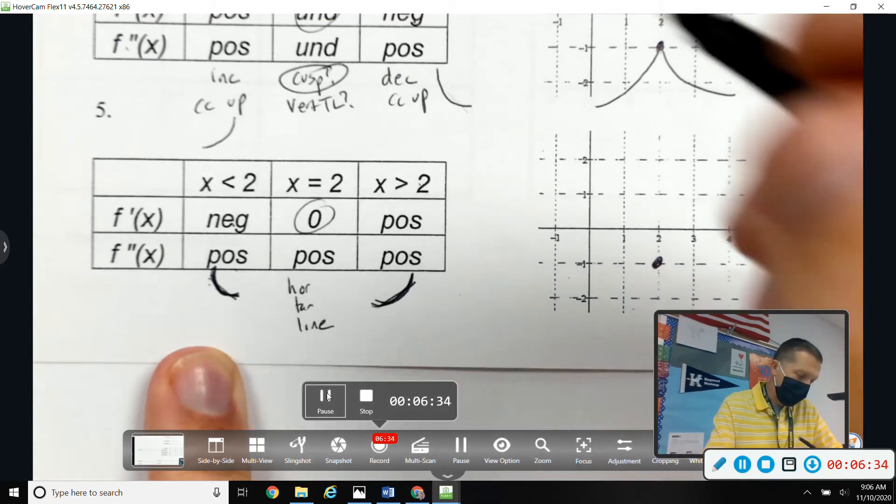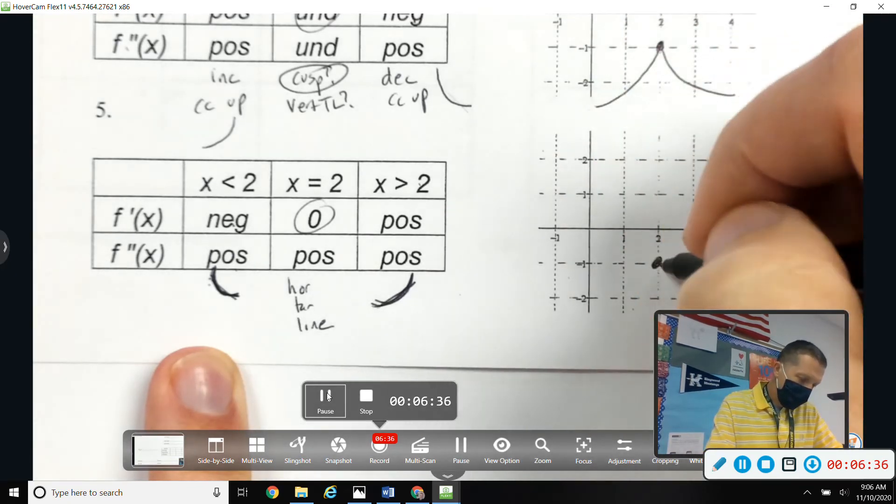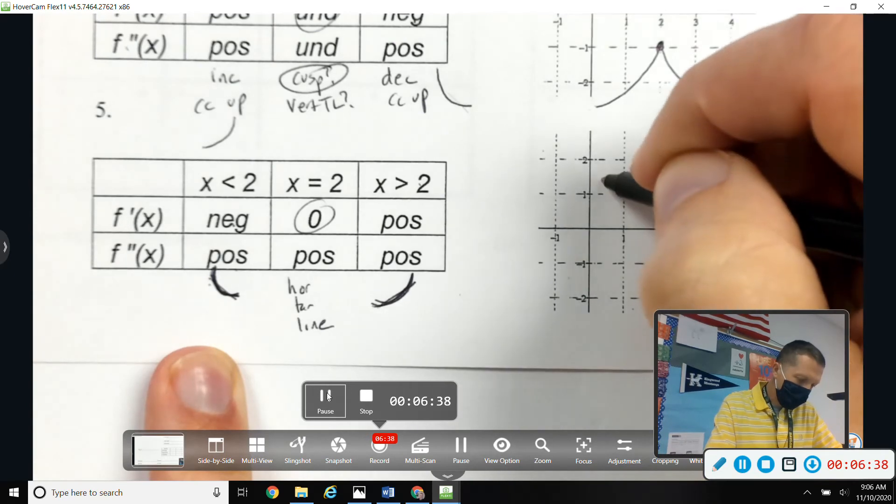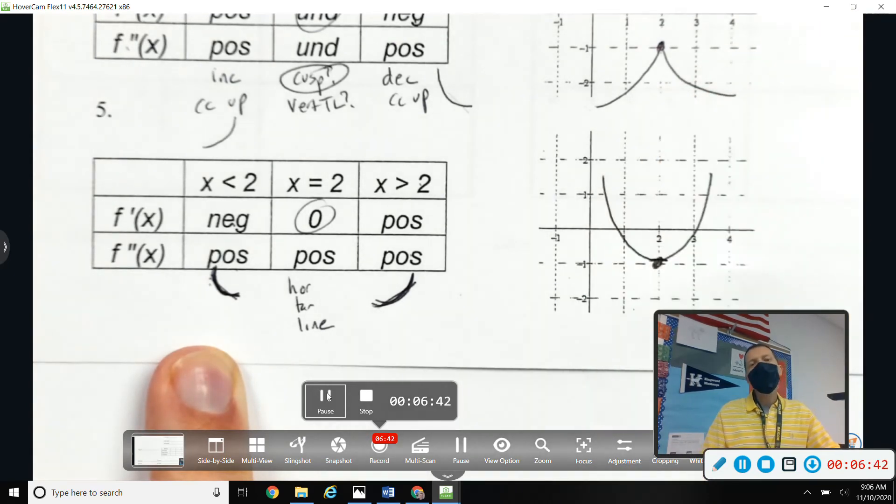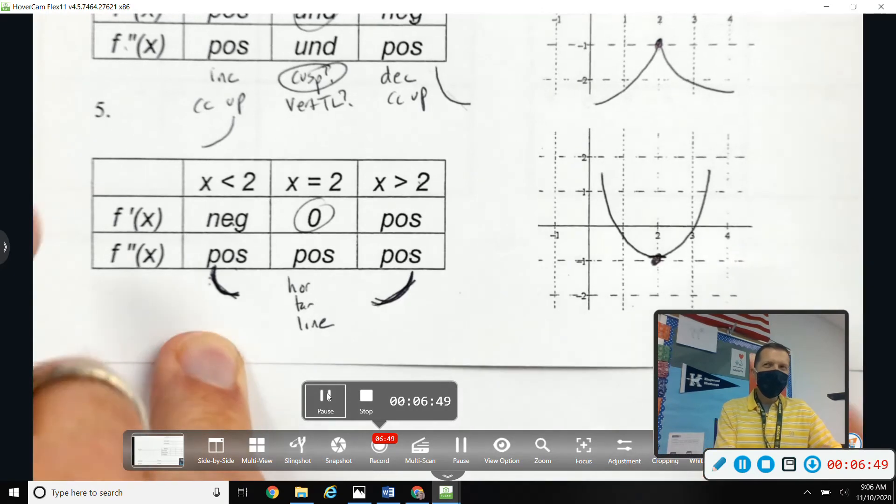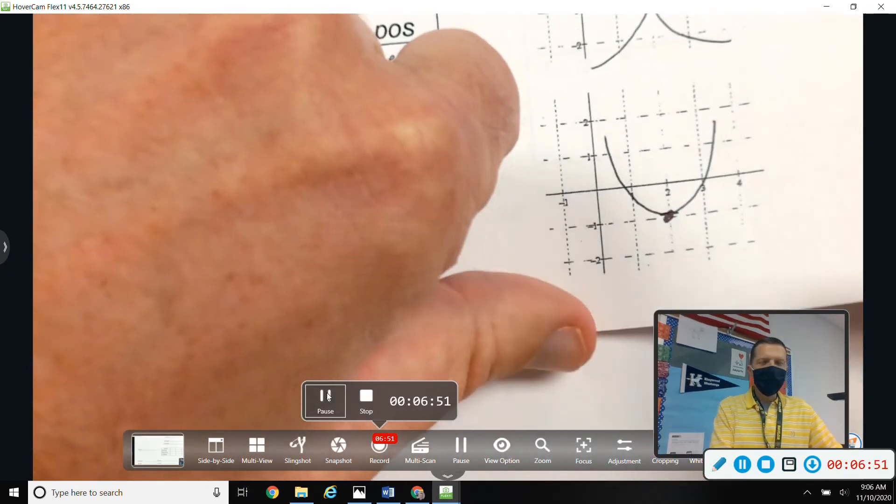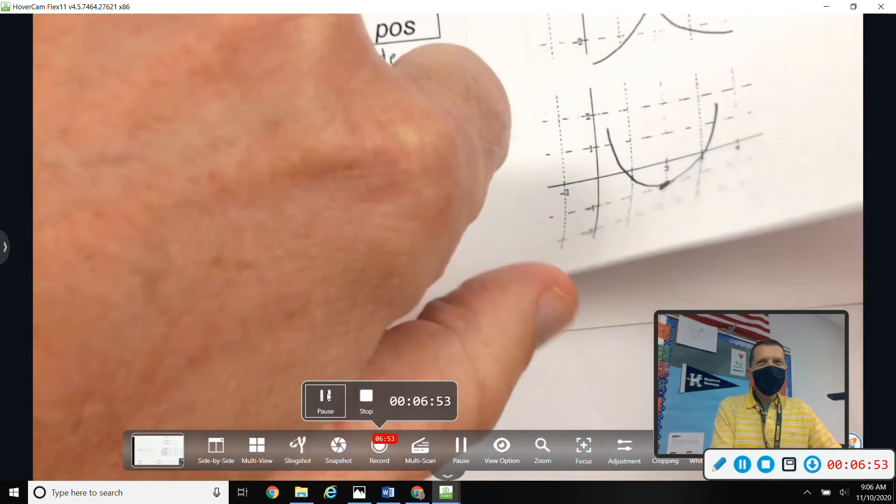So horizontal right there. So this is like a regular - not a regular - a positive parabola or something like it. Questions on any of those? Feeling better about those?